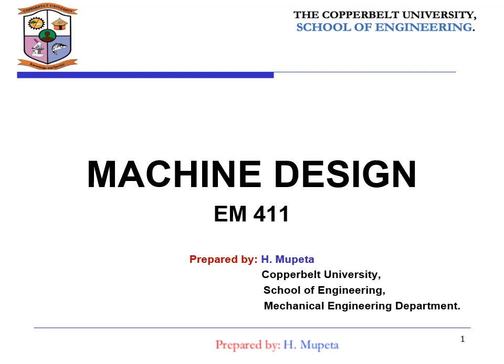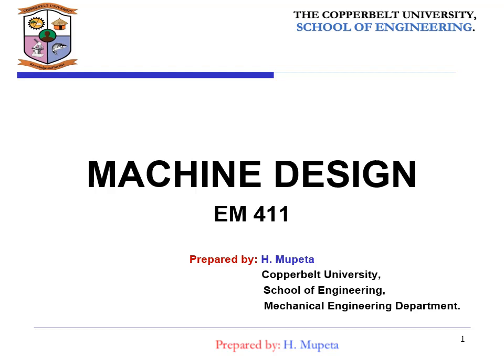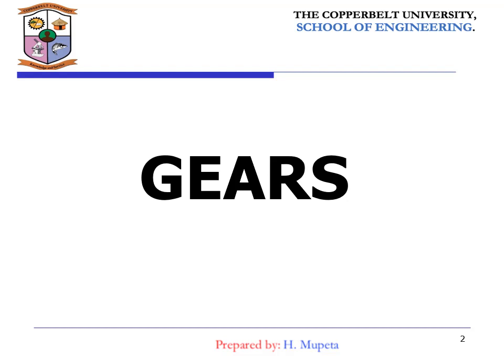This time around we are going to look at gears. What we need to understand about gears is that transmission of rotary motion between rotating shafts is one of the most common applications dealt with in machine analysis. Gears are the most common machine elements used to transmit rotary motion, and they perform this task with uniform motion.